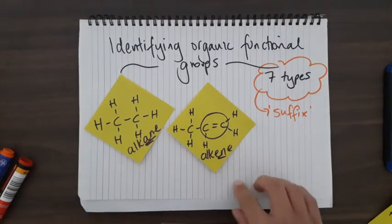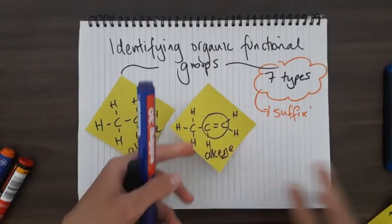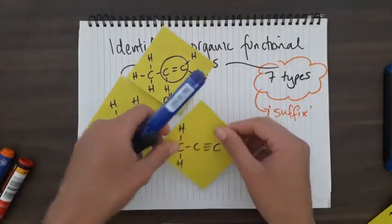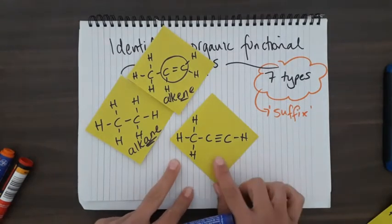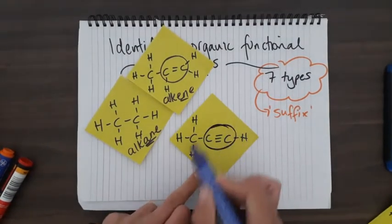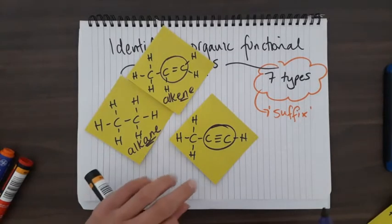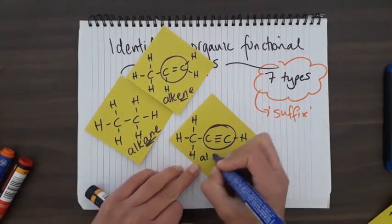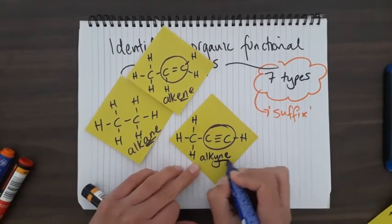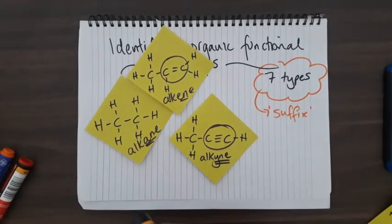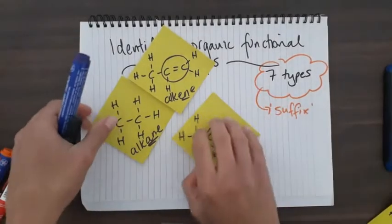There's another one that's very similar. This is again a hydrocarbon, but you'll see here we have a triple bond. You don't see this very often, but they are in the standard. Triple bonds represent alkynes and they will end with the suffix -yne. Those are the pretty easy ones - three of the seven.